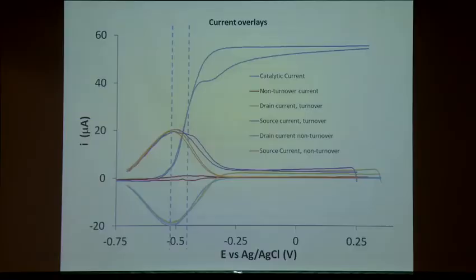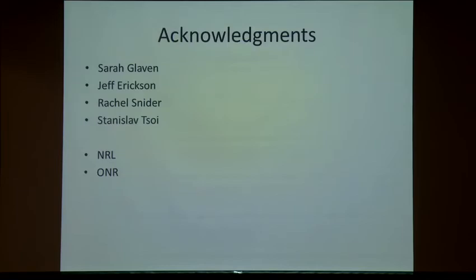When driving electrons in with another electrode, I can go to even more negative potential and access more cytochromes with more negative redox potentials. What those additional cytochromes are doing there, I don't know — they don't seem to be contributing to catalytic current. In conclusion, I want to acknowledge my co-authors and colleagues Sarah, Jeff, Rachel, and Stoss, and ONR and NRL for funding. I'm happy to answer any questions.